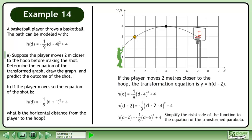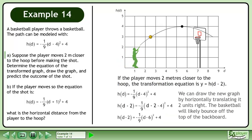h(d - 2) = -1/9(d - 6)² + 4. We can draw the new graph by horizontally translating it 2 units right. The basketball will likely bounce off the top of the backboard.